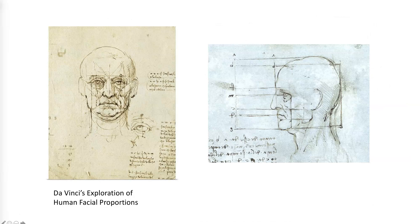We're looking at da Vinci's exploration of human facial proportions, circa 1470s. We're looking at how he's analyzing the placement of the individual forms. For example, the eyes are in the middle of the head, the nose lies halfway between the eyes and the bottom of the chin, and the mouth lies between the nose and the top of the chin. He's really breaking down the head into these individual shapes so he can figure out placement of form.